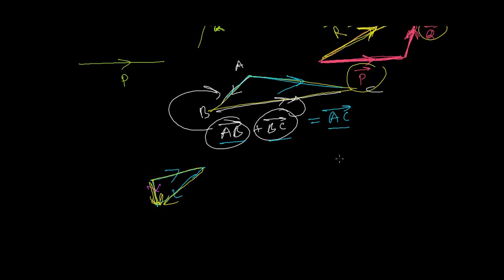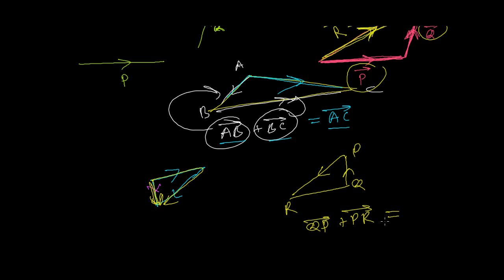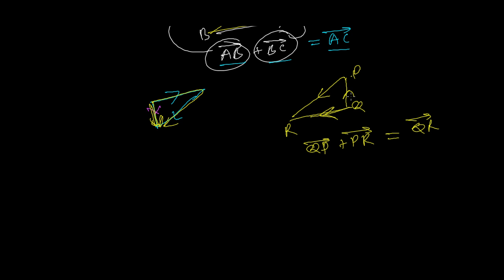Let's say this triangle has vertices P, Q, and R. Taking any two sides in order — let's take QP and PR — then the resultant is QR taken in reverse order. If you want to write without making figures, look at QP and PR: remove the middle letter P, and you get QR.